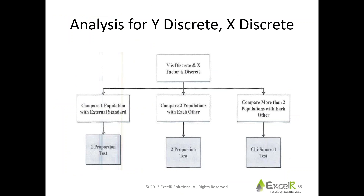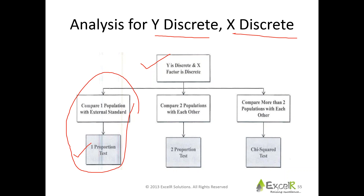This is one more thing I want to quickly show you before we move on with ANOVA. Here is a small chart which explains how you deal with the data and what kind of tests you perform if both Y and X are discrete. If you're comparing one population with an external standard or benchmark, you call it a one proportion test. If comparing two things, you call it a two proportion test, and if more than two populations, you call it a chi-square test. We've already discussed two proportion test and chi-square test using case studies.